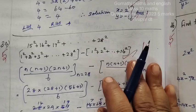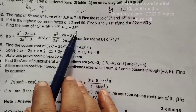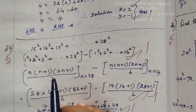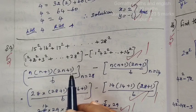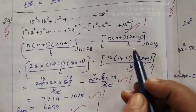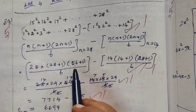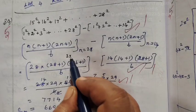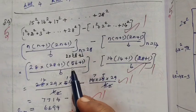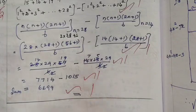Now find the sum of 15 squared plus 16 squared — this is the sum of squares formula: N(N+1)(2N+1)/6. Here N order value is 28 and N order value is 14. So 28 × 29 × 57 / 6 — cancel using 2 × 28, and you get the final answer.